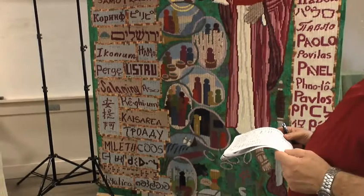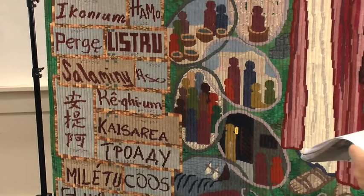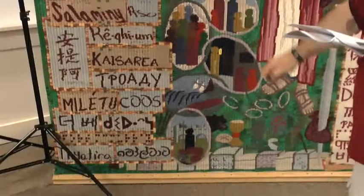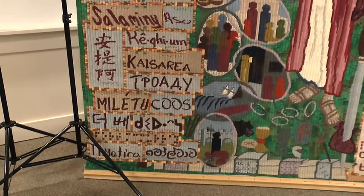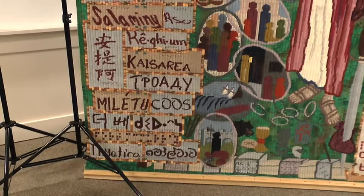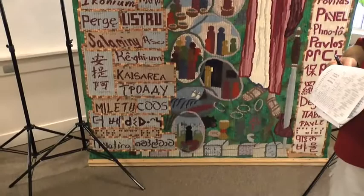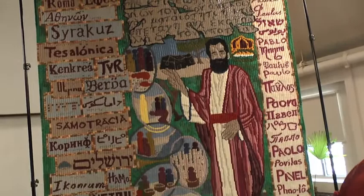Continuing: Lystra in Latvian, Salamis in Czech, Assos in Swahili, Corinth and Antioch in Chinese, Regium in Vietnamese, Caesarea in Awe — an African language — Troas in Serbian, Miletus in Slovak, Kos in Gaelic, Derbe in Korean, Colosse in Cree, and in Braille Fort McMurray — St. Paul wasn't there but I was — Thyatira in English, and Malta in Sinhalese.